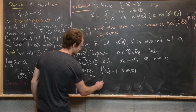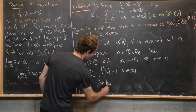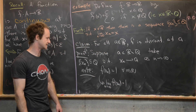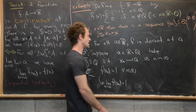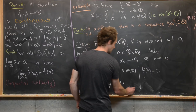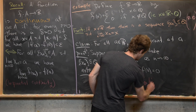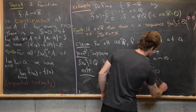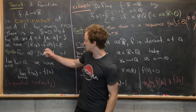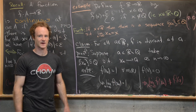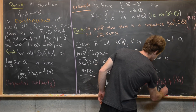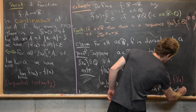Since each x_n is rational, f(x_n) = 1 for all n, so the limit as n → ∞ of f(x_n) = 1 (it's just the limit of a constant sequence). But since a is irrational, f(a) = 0. These two facts are inconsistent with sequential continuity: the limit of f(x_n) is 1, but f(a) = 0, and 1 ≠ 0, so the sequential continuity condition fails. Therefore f is discontinuous at a.